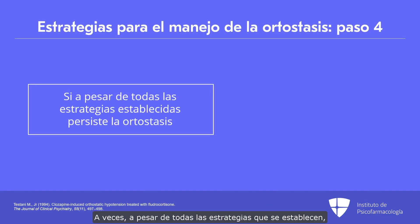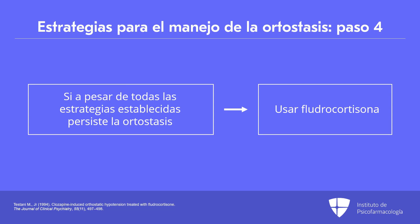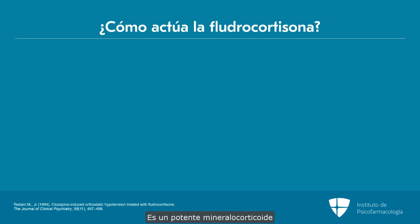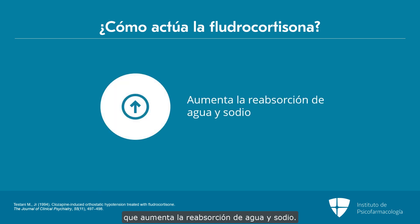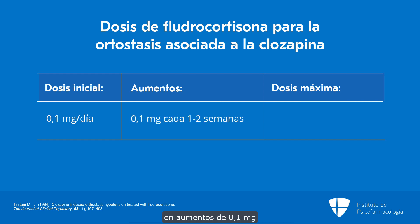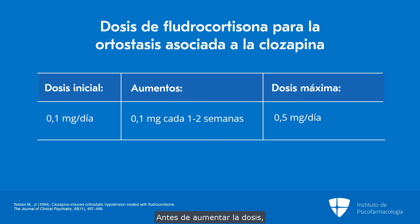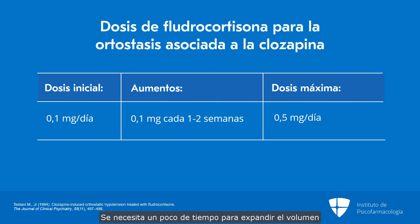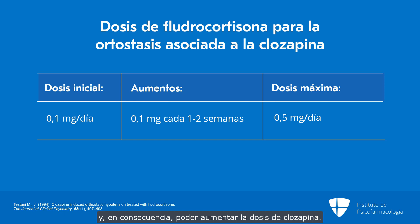Sometimes, despite all of the measures you try, you run into a problem with persistent orthostasis. There is a specific medicine called fludrocortisone, which is a volume expander. It is a potent mineralocorticoid that increases water and sodium reabsorption. The starting dose is 0.1 mg orally daily. You can increase it every one to two weeks in 0.1 mg increments to the maximal adult daily dose of 0.5 mg. Give each 0.1 mg dose increment some time to work before going up, as it does take some time to volume expand — but often this will allow you to treat the orthostasis and thereby permit further titration of clozapine.